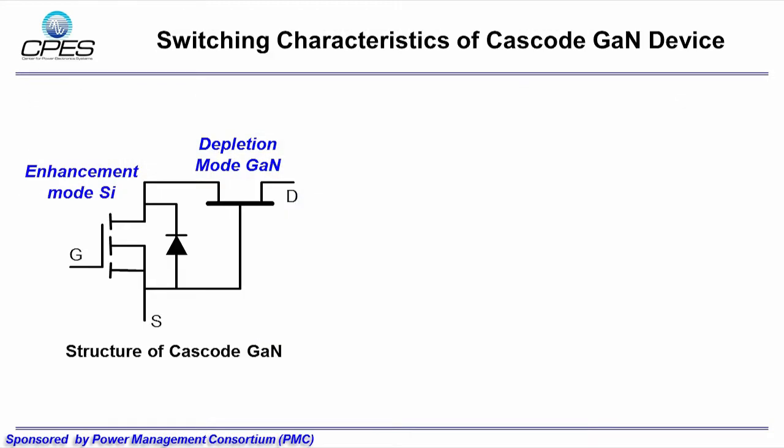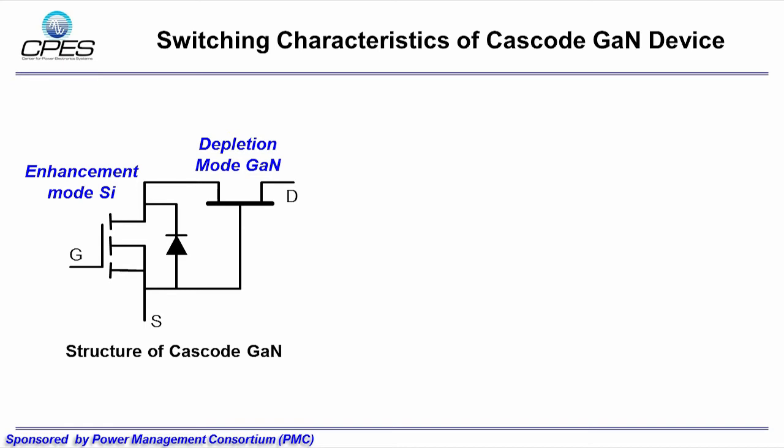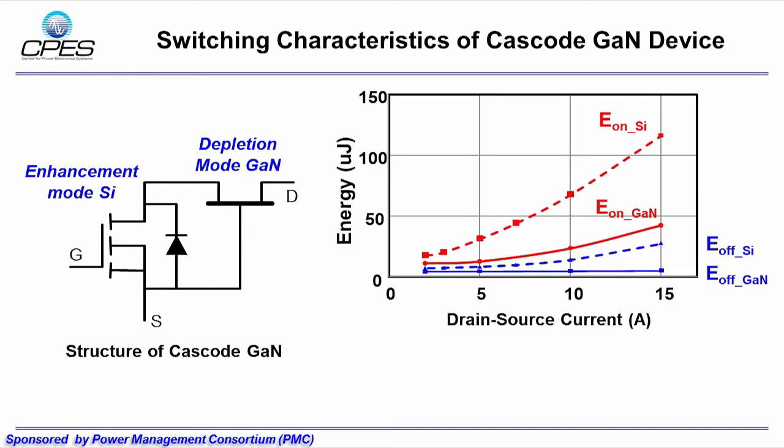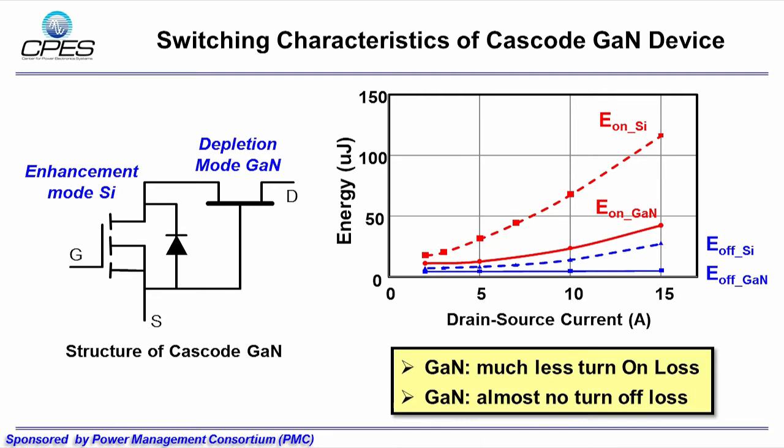In current stage, the 600V Cascode GaN switch is preferred due to its easier gate drive and better switch performance. The right-hand side figure shows the switching energy comparison between Cascode GaN switch and state-of-the-art silicon MOSFET. It is obvious that GaN switch has much less turn-on switching loss. The turn-off loss is negligible due to current source driving mechanism existing in the Cascode configuration.